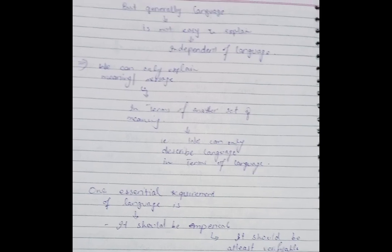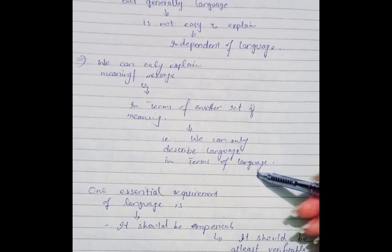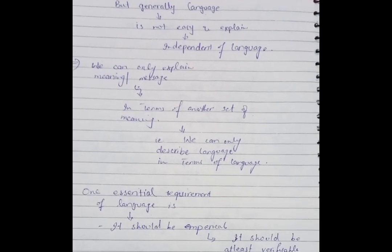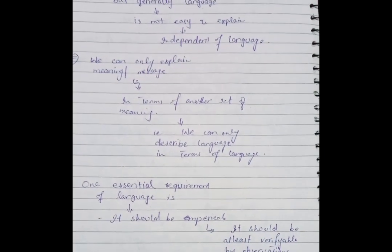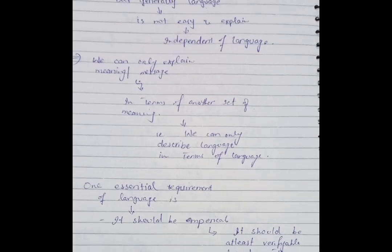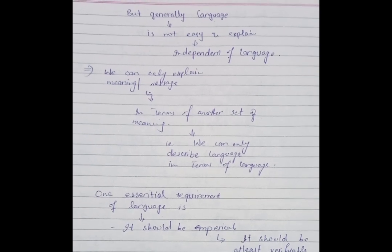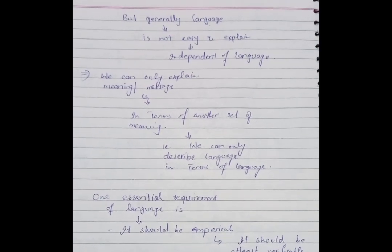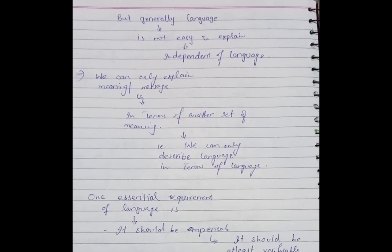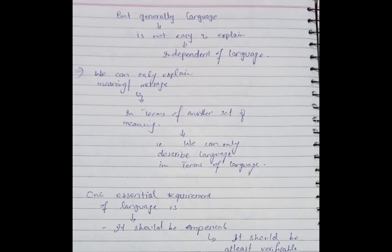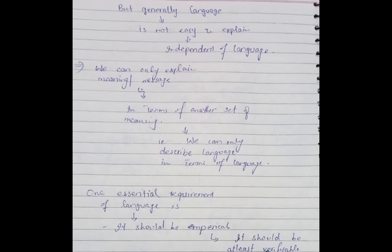We can only explain meaning and messages in terms of another set of meanings; we can only describe language in terms of language. Another important requirement of language is that it should be empirical — meaning it should be questionable. If you have given some theory in language, it should be questioned, and the founder of that theory needs to explain what is being questioned.